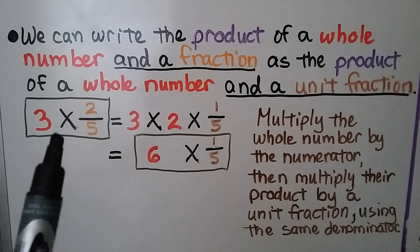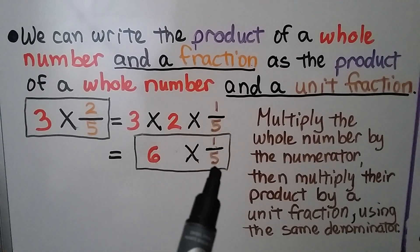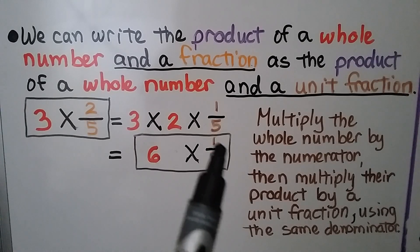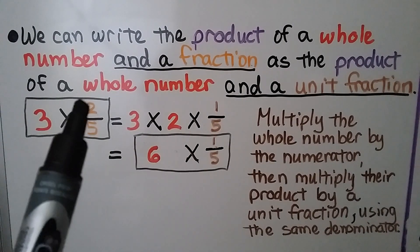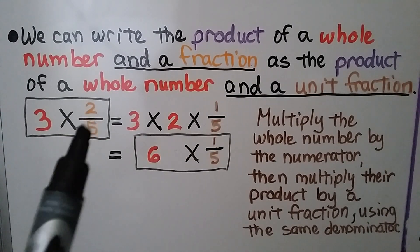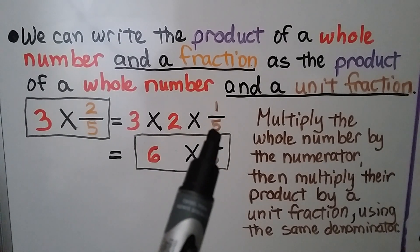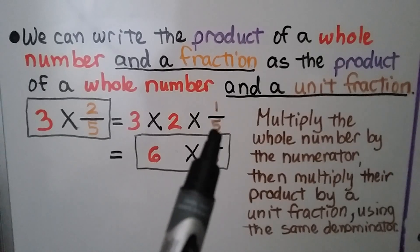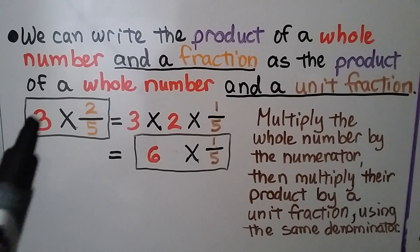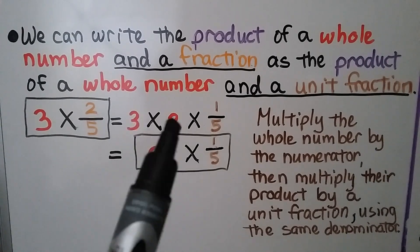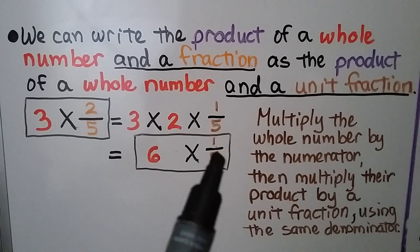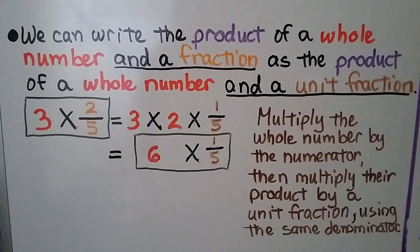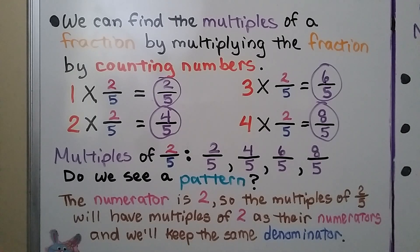We can write the product of a whole number and a fraction, like 3 times 2/5, as the product of a whole number and a unit fraction. Remember, unit fractions have 1 for a numerator. We have 3 times 2/5, which equals 3 times the numerator 2, times the unit fraction 1/5. We multiply the whole number by the numerator, giving us 6 times 1/5.